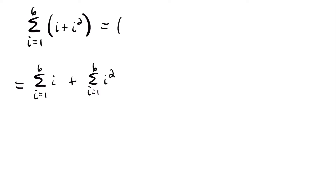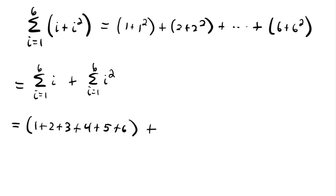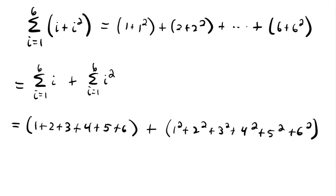Previously this would have been 1 plus 1 squared plus 2 plus 2 squared, and so on up to 6 plus 6 squared. Now with two separate sums, the first sum is 1 plus 2 plus 3 plus 4 plus 5 plus 6, and the second sum is 1 squared plus 2 squared plus 3 squared plus 4 squared plus 5 squared plus 6 squared. The order of addition doesn't matter, so this equals 21 plus 91, which equals 112. Splitting a sum like this is very helpful when working with sigma notation.